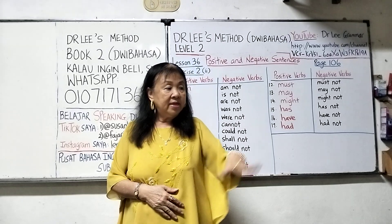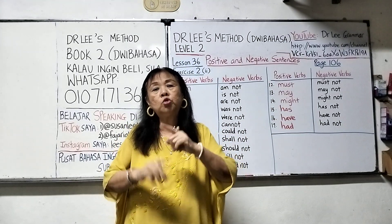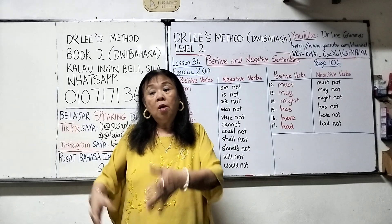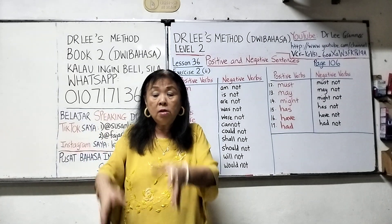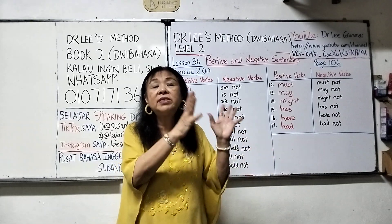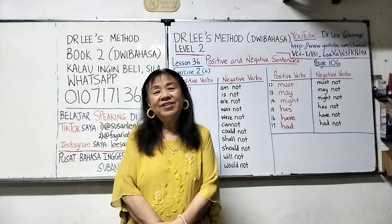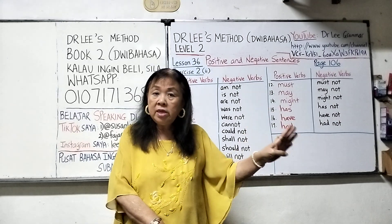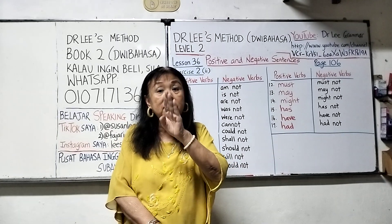It does not mean that because you studied in year four, you don't have to study again in form four. Absolutely untrue. That is why in my books, all 38 lessons in book one are in book two, all 40 lessons in book two are in book three, and all 42 lessons in book three will be in book four. The difference is that what you learn in year four, when you go to form four you still learn the same thing, but it's much, much harder.